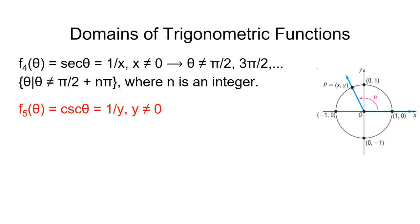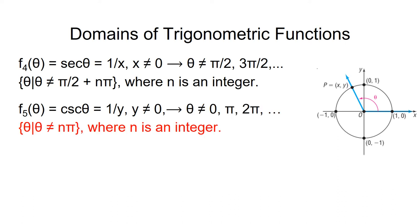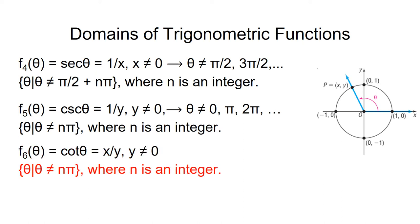Now let's look at cosecant theta. Here we see that y cannot be 0, which means that the terminal side of theta cannot lie along the x-axis, where y would be 0. This means that theta cannot equal 0 degrees or radians, or pi radians, or 2 pi radians, and so forth. So the domain of theta is theta such that theta does not equal n times pi, where n is any integer. When we look at cotangent of theta, we see that it has the same restriction as cosecant theta — that is, y cannot equal 0. So the domain of cotangent of theta is the same as that of cosecant theta.